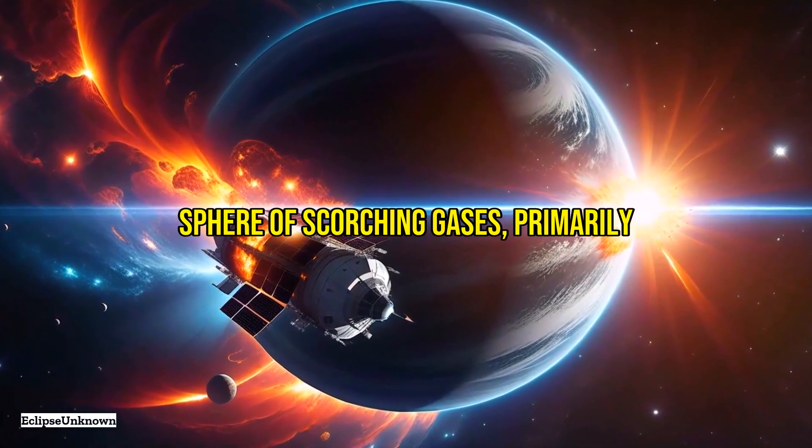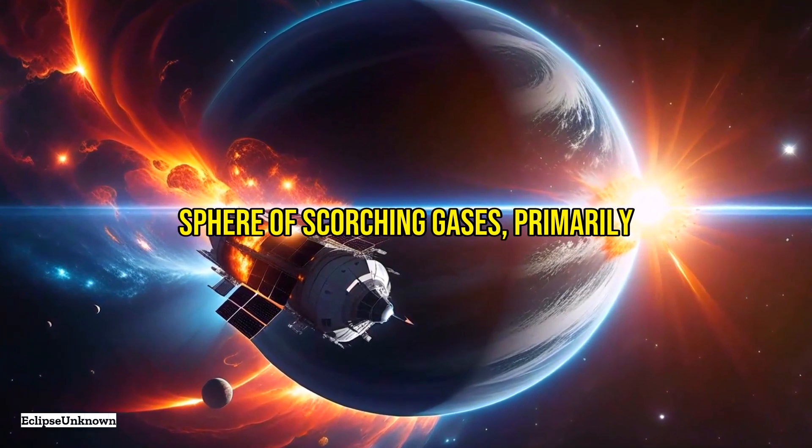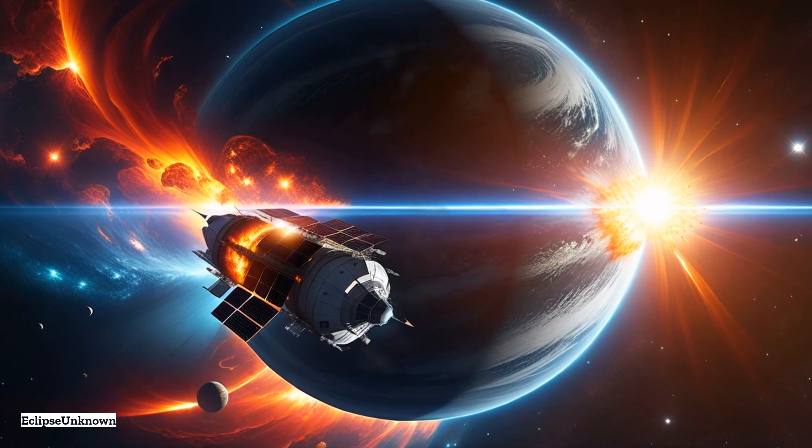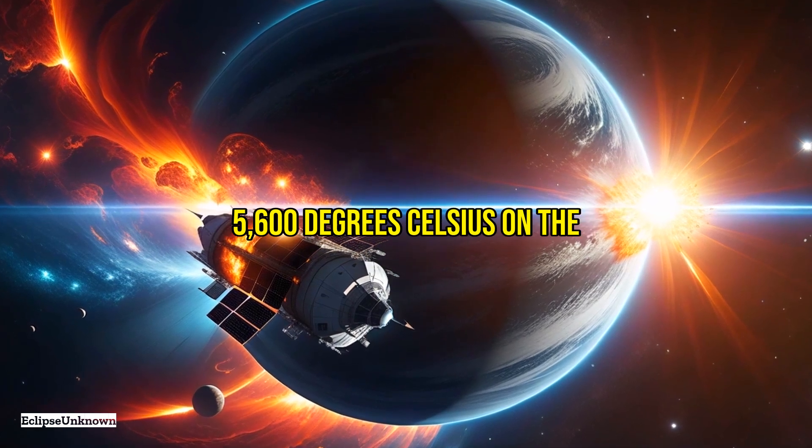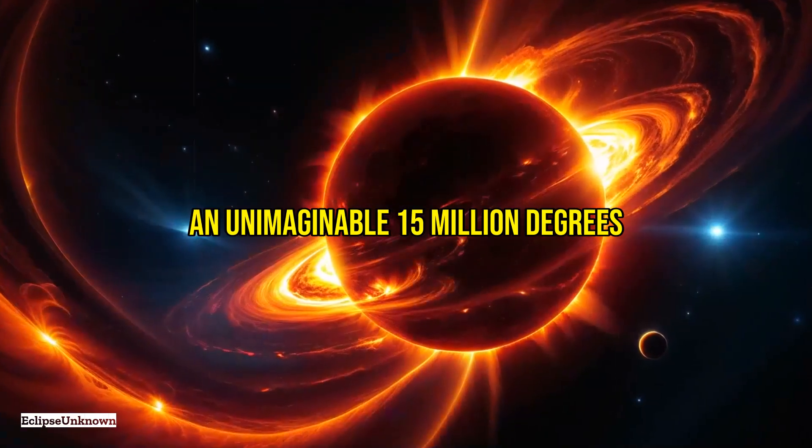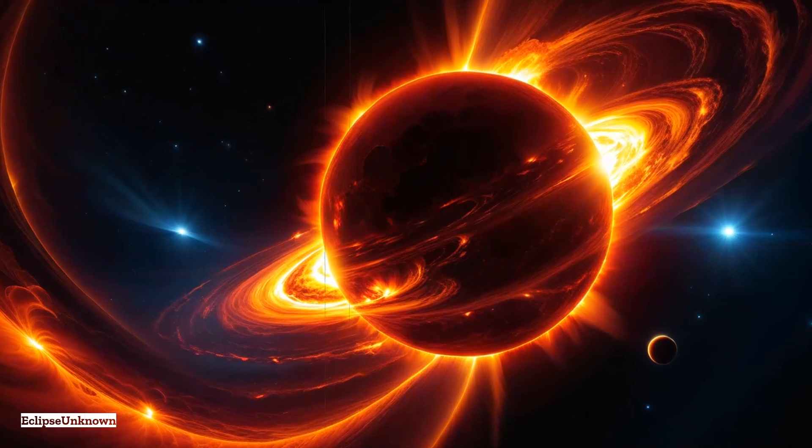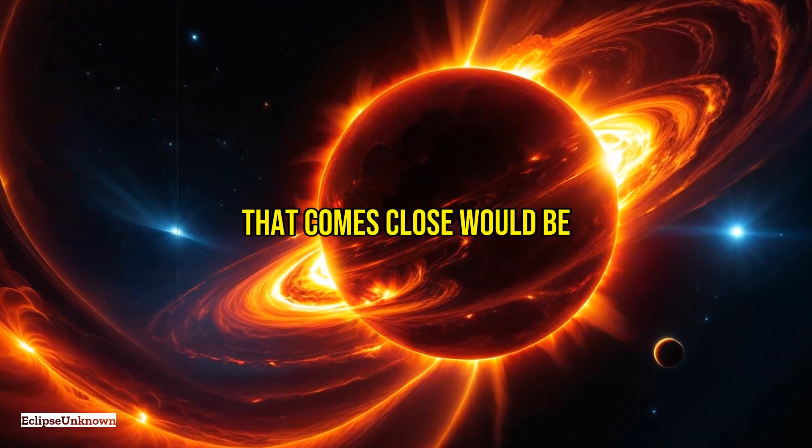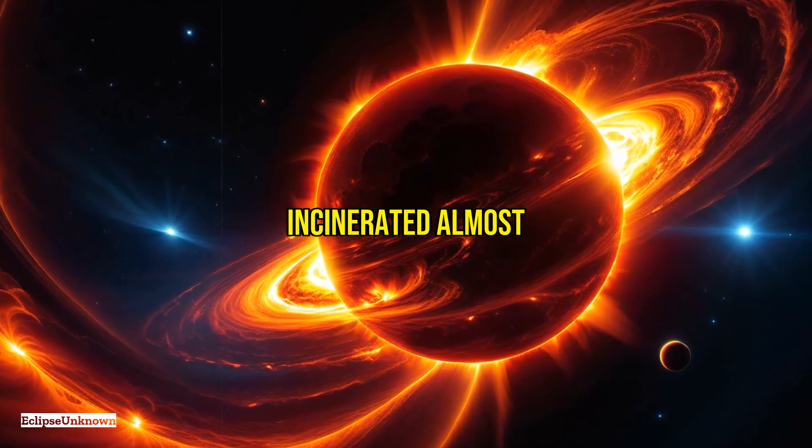The sun is a blazing sphere of scorching gases, primarily hydrogen and helium, where temperatures soar to about 5,600 degrees Celsius on the surface and an unimaginable 15 million degrees Celsius at the core. This intense heat means anything that comes close would be incinerated almost immediately.